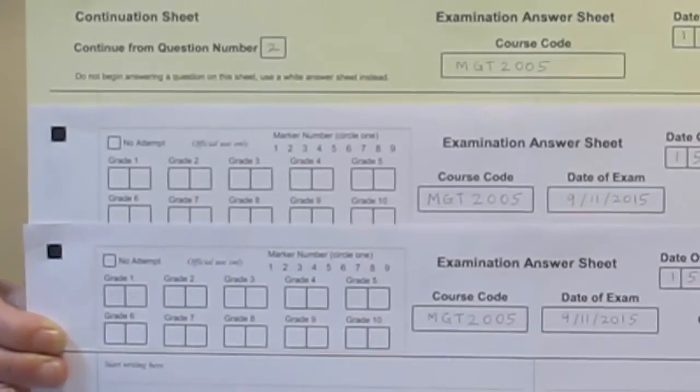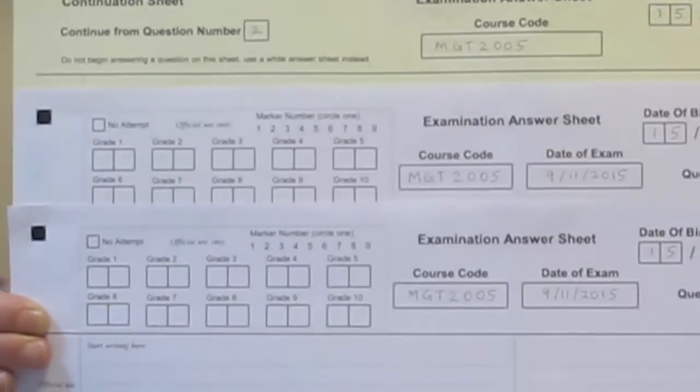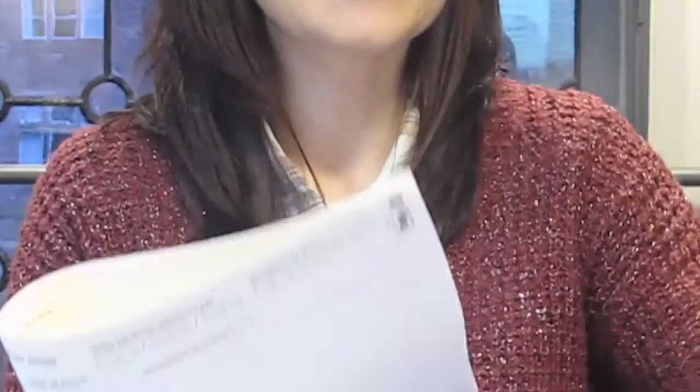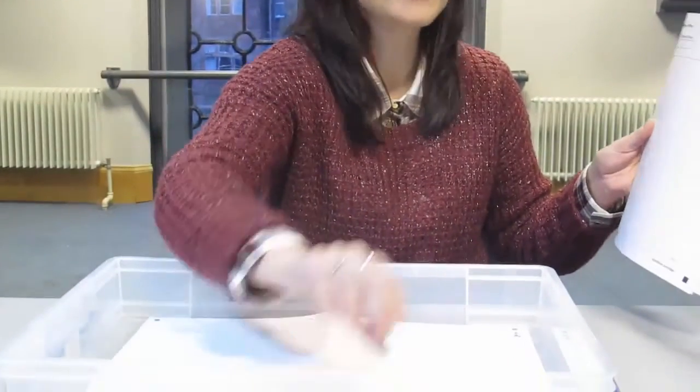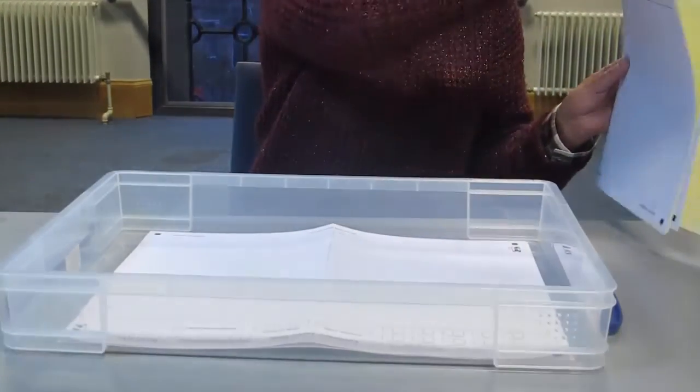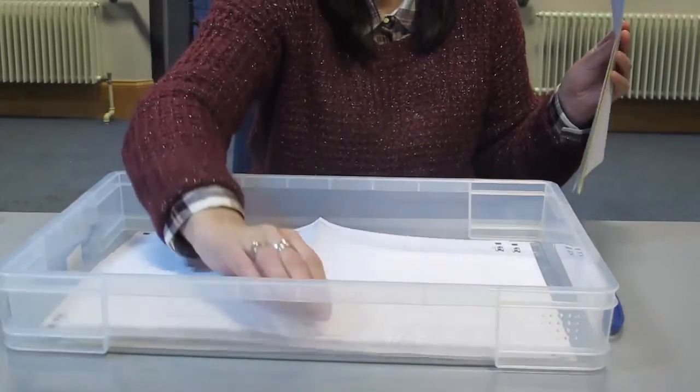You can collect the answer sheets folded to A4 size permitting you to count by student. Answer sheets should be unfolded to A3 size with the student details completed and be facing up and in the same direction. Any continuation sheets should follow the relevant white answer sheet.